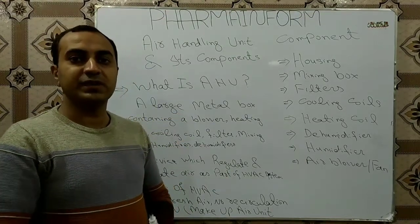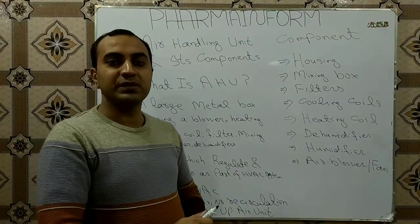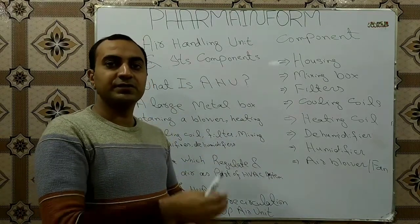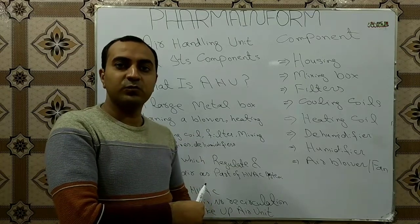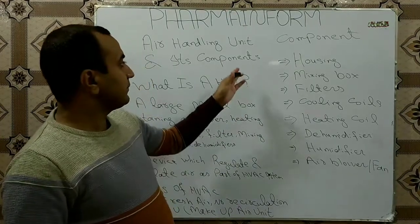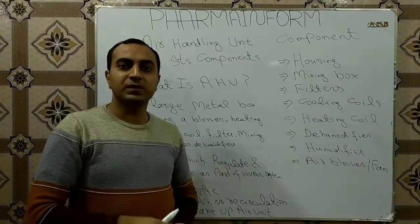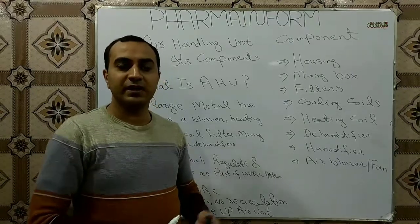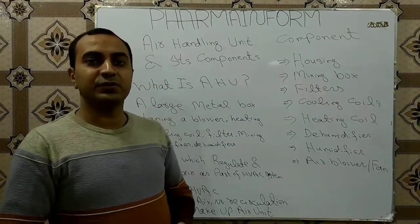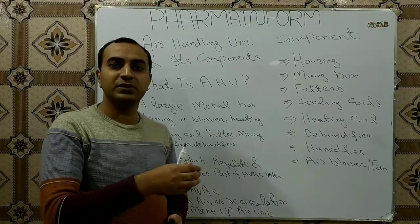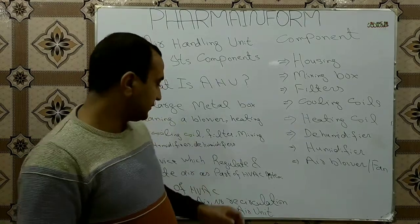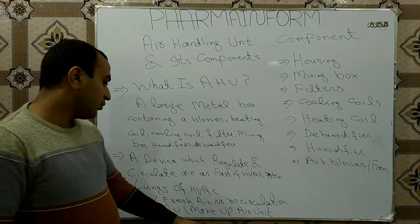AHU also reconditions the air which comes from the rooms. AHU takes fresh air from the outside environment, conditions it, supplies it into the room, and then this air from the room comes back again into the air handling unit for reprocessing. This type of air handling unit usually consumes 10 to 15 percent fresh air, and the remaining air is taken from the room as return air and reprocessed.